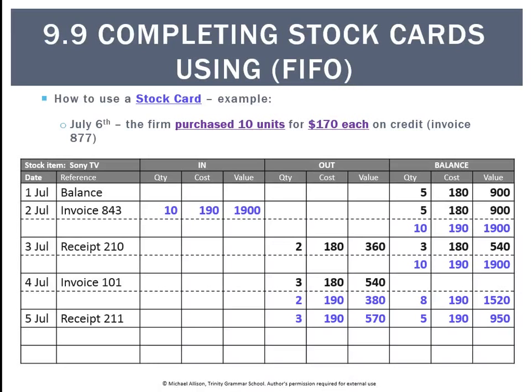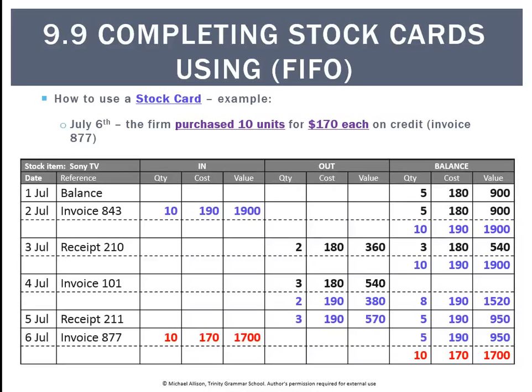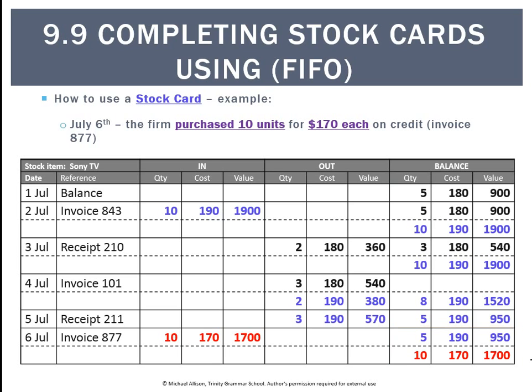On July the 6th, we bought 10 units for $170 each, invoice 877. In the in column, we record 10 units at $170 for a total of $1,700. That leaves a final balance showing the first-in units of 5 at $190 for $950 listed on top, and underneath, the next-in units of 10 at $170 for a total of $1,700.